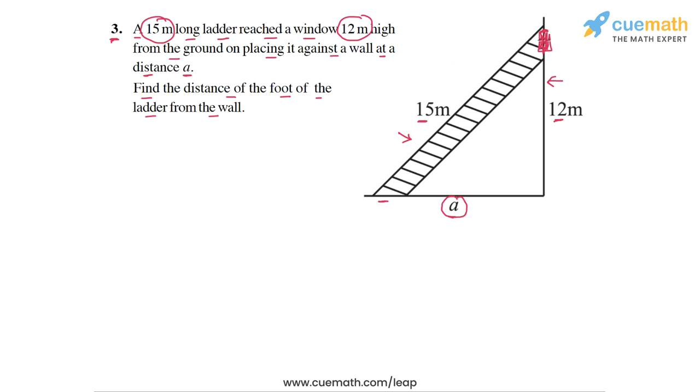We have the ladder itself forming the hypotenuse of the right triangle. We have this part of the wall from the window to the ground which is 12 meters in length. This is forming the vertical edge of the right triangle. And then we have the ground itself which is forming the horizontal side of the right triangle.